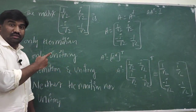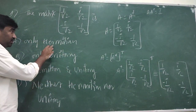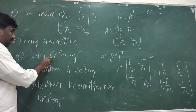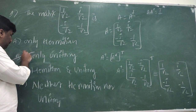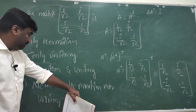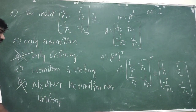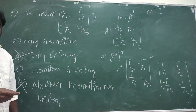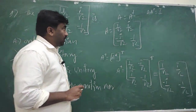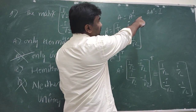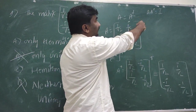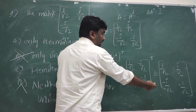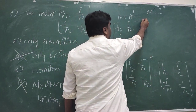Since A = A†, the given matrix is Hermitian. Now we have to verify whether it is also unitary. For a unitary matrix, A·A† must equal the identity matrix I. Since A = A†, we compute A² using the same matrix.